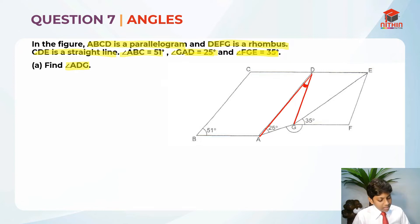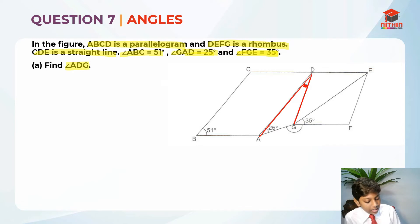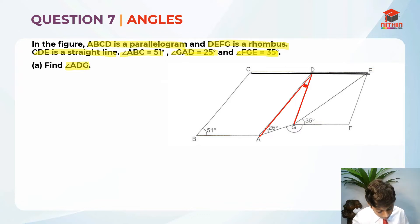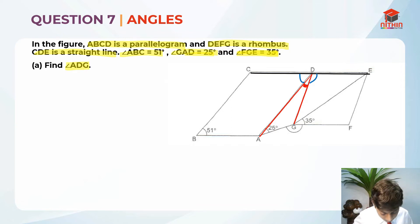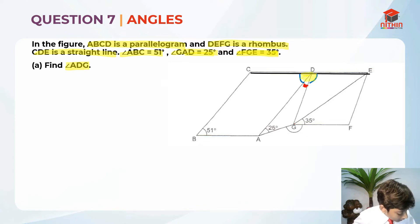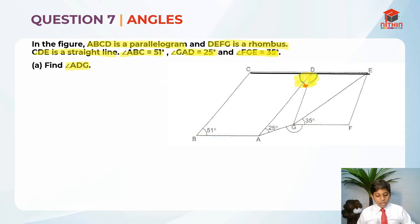They are telling us that angle ABC is 51 degrees. In order to find angle ADG, they are telling us that CDE is a straight line. So I am going to find these two angles over here, and use the 180 degrees on the straight line, minus these two blue angles, which will give me angle ADG. This is how we are going to solve this question.